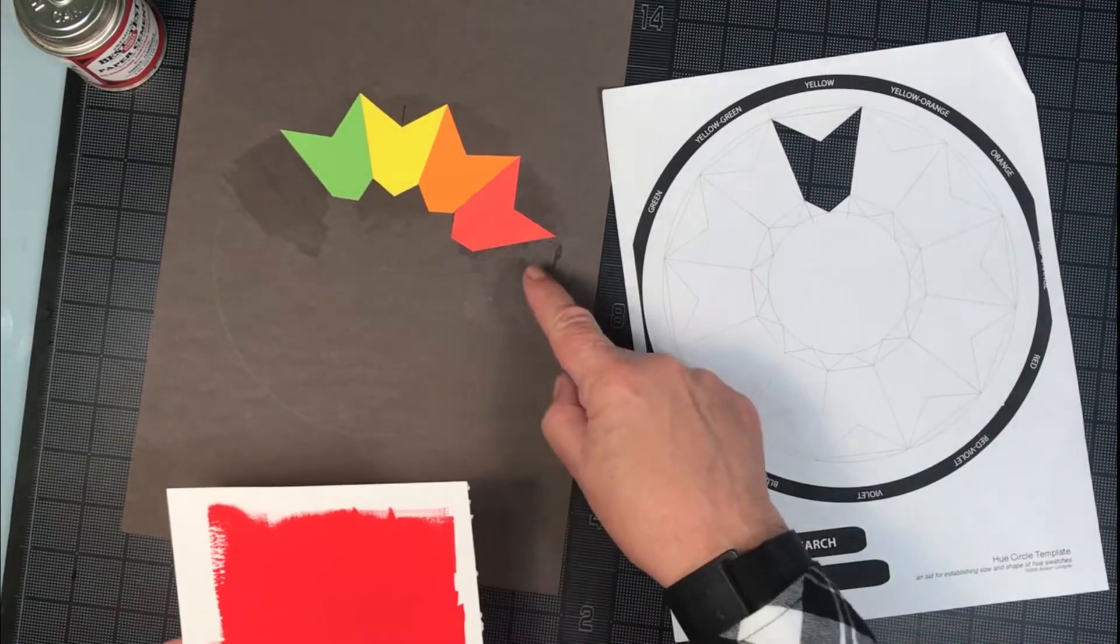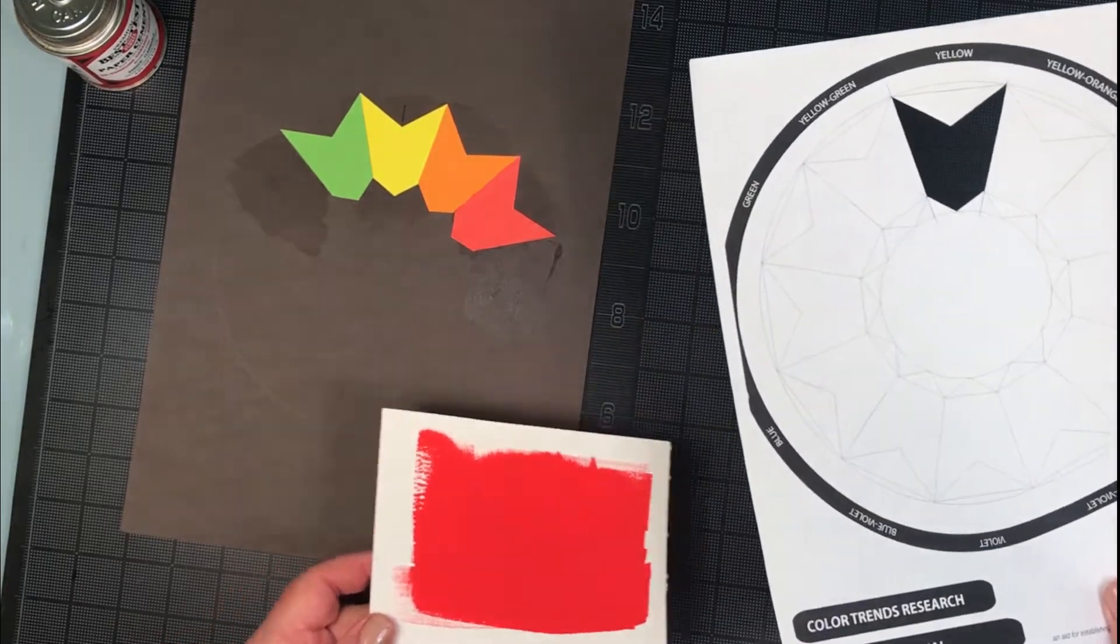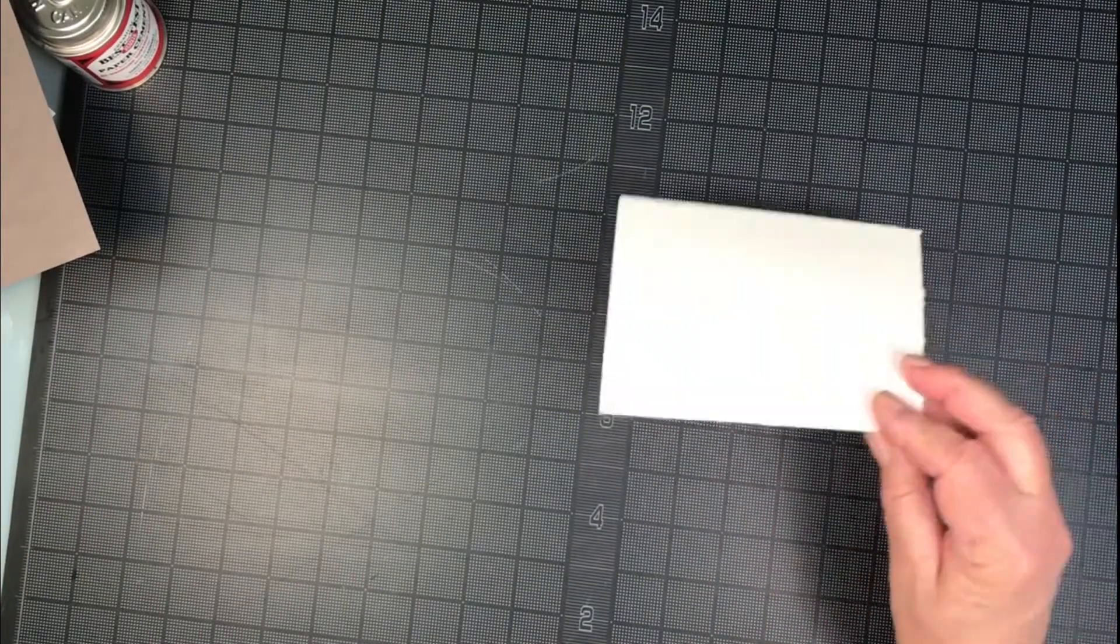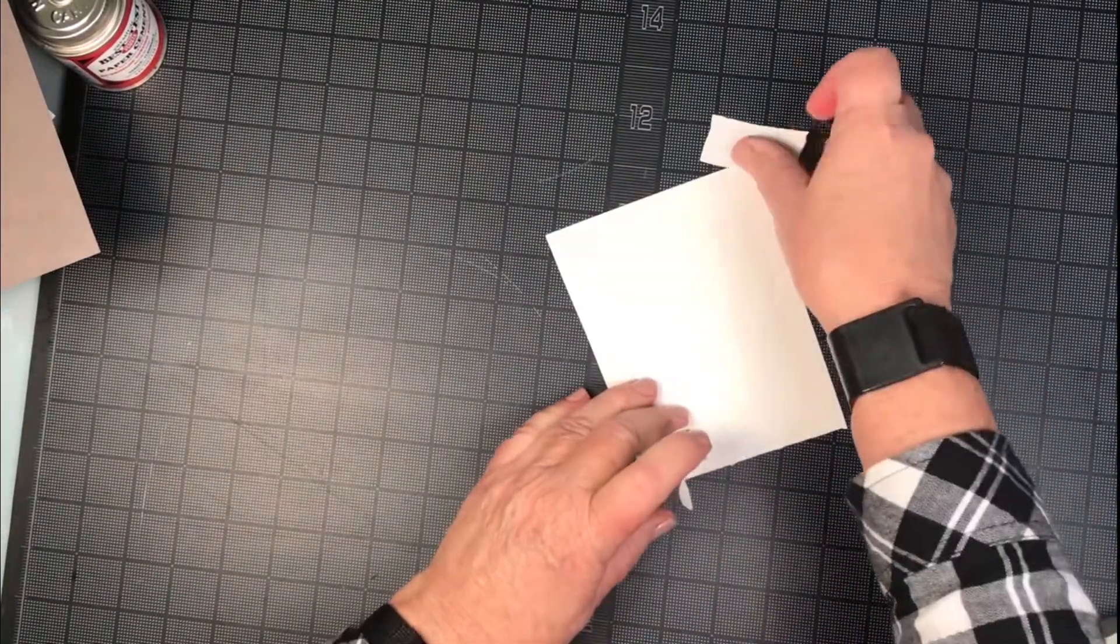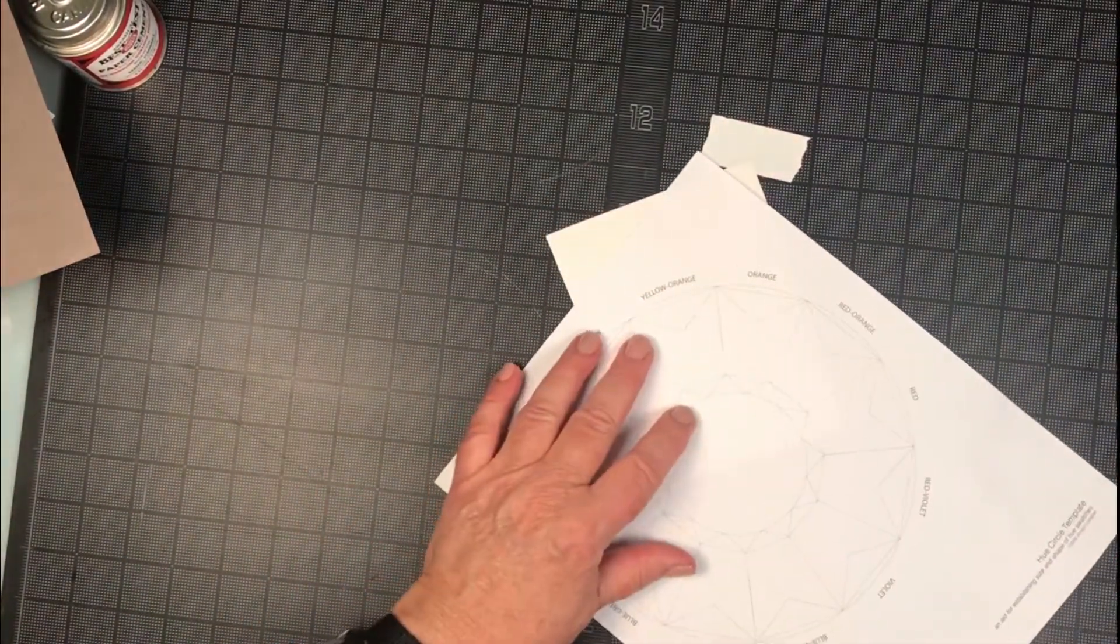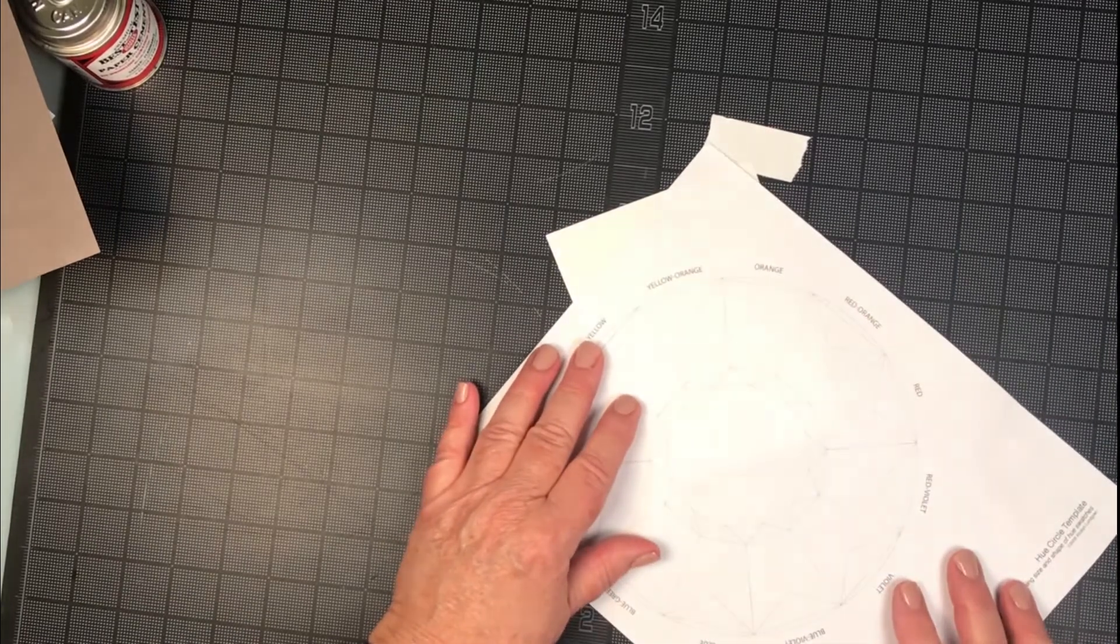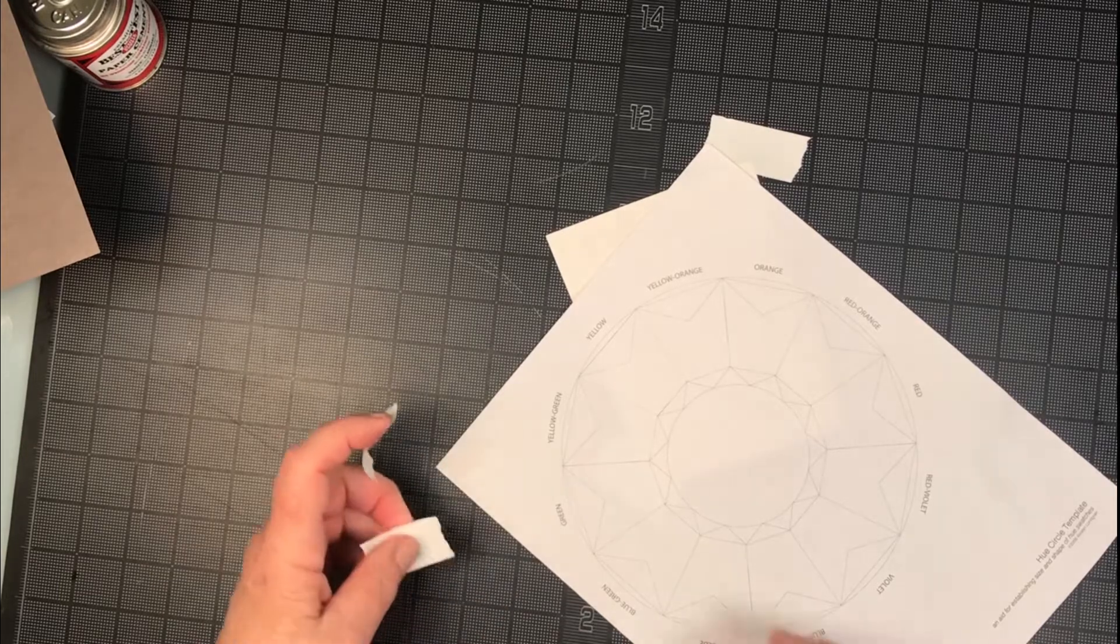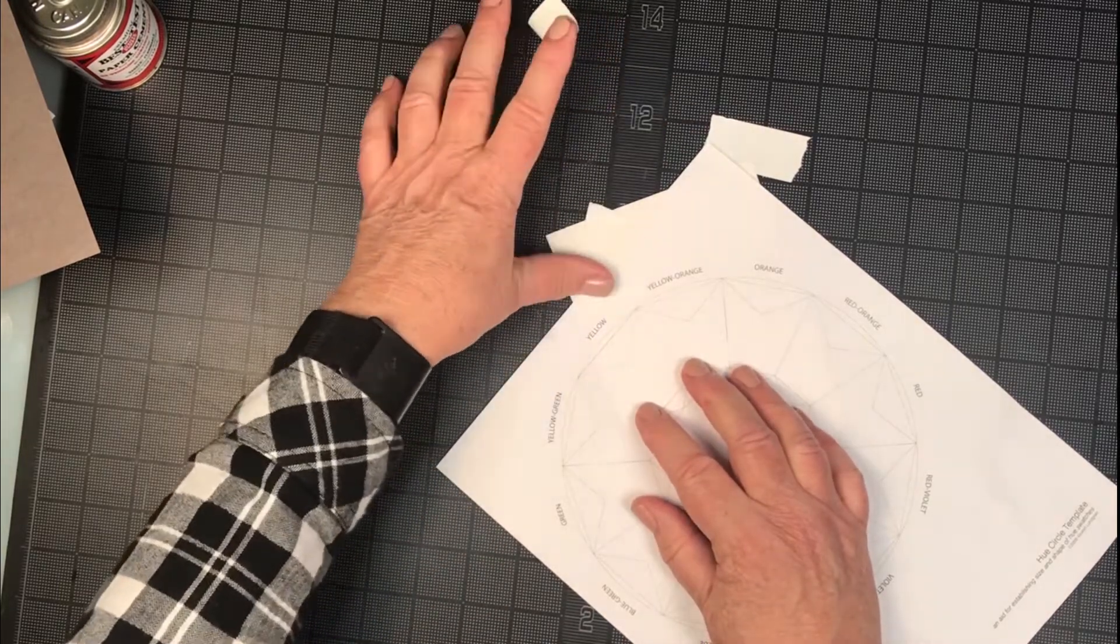We'll just work with this swatch, and so that's going to go right here. So here's our template. I'm going to turn the swatch over and I'm going to tape it down. Then I'm going to put the template on top of the swatch, and I'm also going to tape that down.